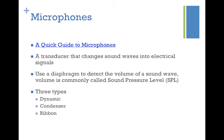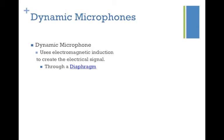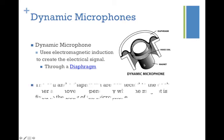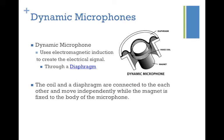We have dynamic, condenser, and ribbon microphones. A dynamic microphone uses electromagnetic induction to create the electrical signal. It does that through a diaphragm — you have the diaphragm material at the very top, and then underneath you have a voice coil and a magnet. The coil and the diaphragm are actually connected to one another.